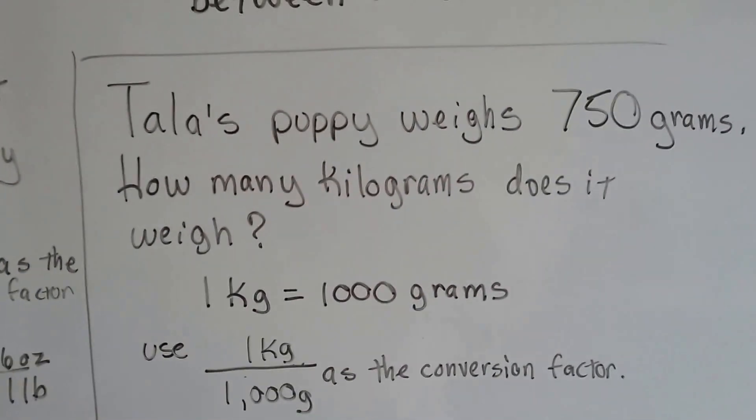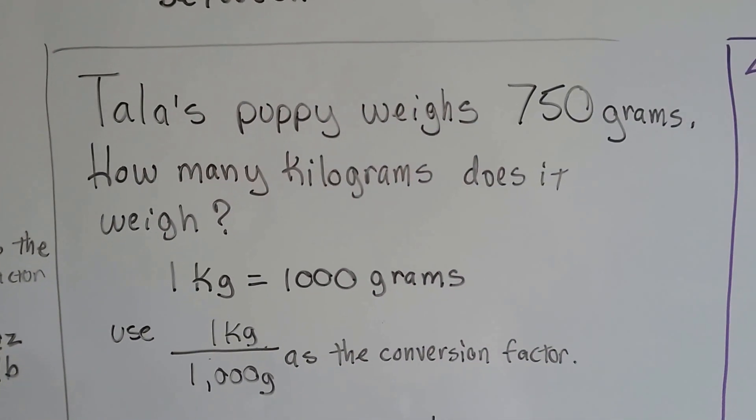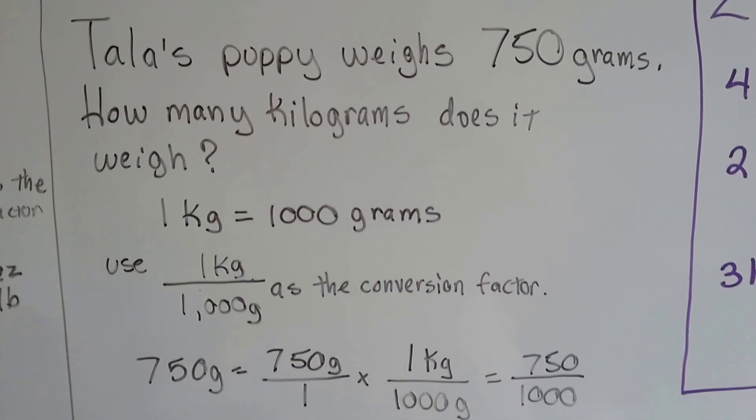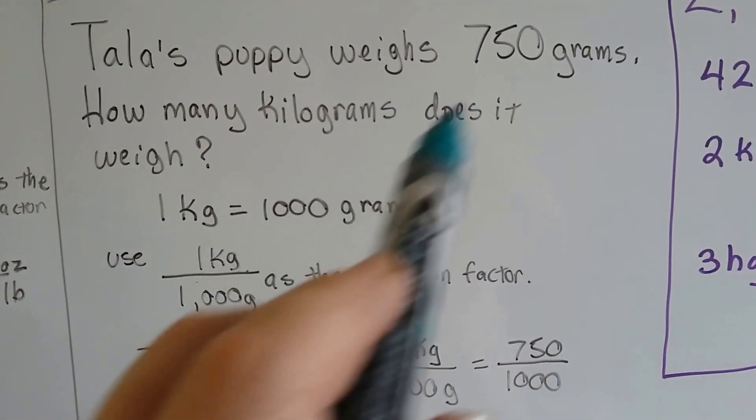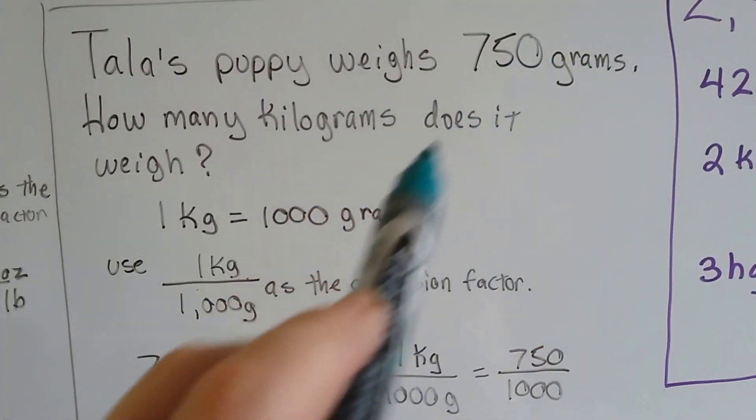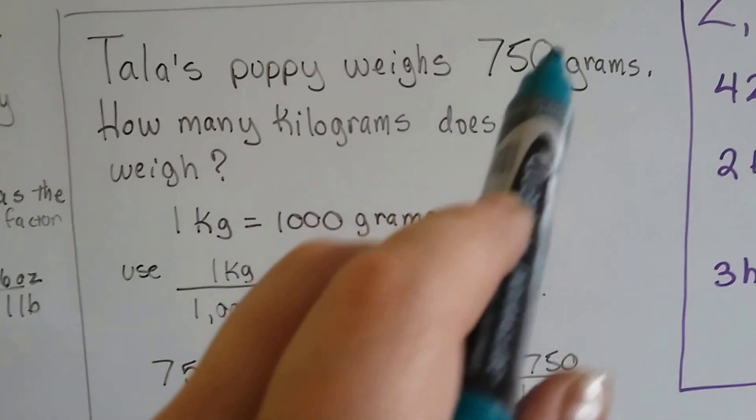Tao's puppy weighed 750 grams. How many kilograms does it weigh? Well, one kilogram is 1,000 grams. So it doesn't even weigh one kilogram, does it? It's less than a kilogram. We can see that already.